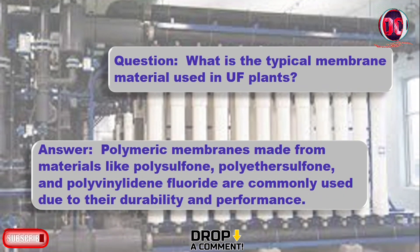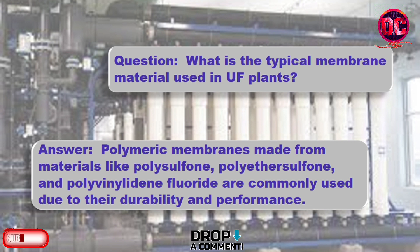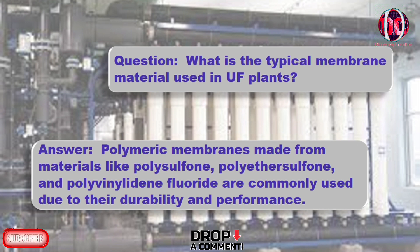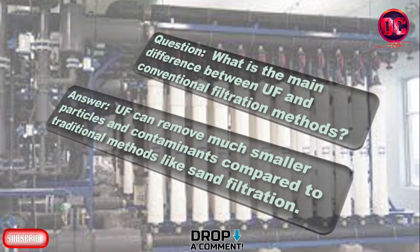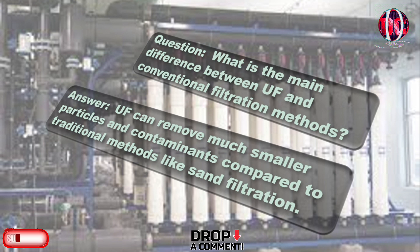What is the typical membrane material used in UF plants? Polymeric membranes made from materials like polysulfone, polyethersulfone, and polyvinylidene fluoride are commonly used due to their durability and performance. What is the main difference between UF and conventional filtration methods? UF can remove much smaller particles and contaminants compared to traditional methods like sand filtration.